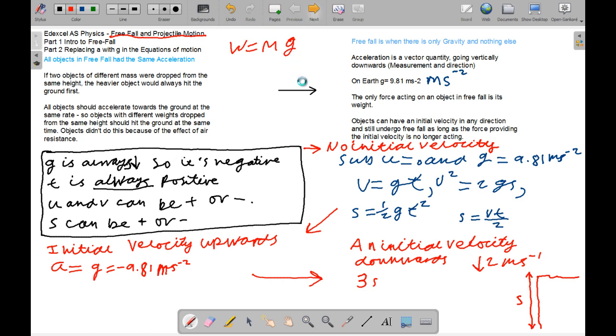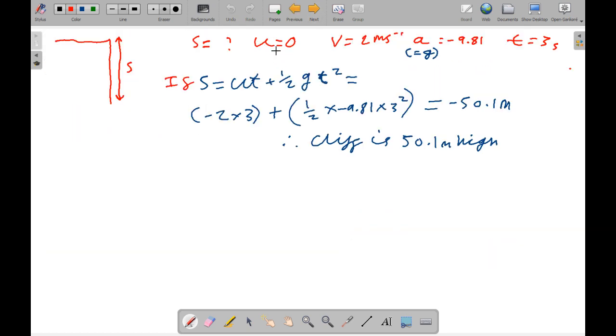we should get, if we go to the next page. Now, if we look, minus 2 times 3 plus half times minus 9.81 plus 3 squared equals minus 50.1 meters. The cliff is 50.1 meters high,